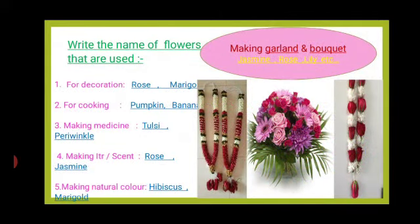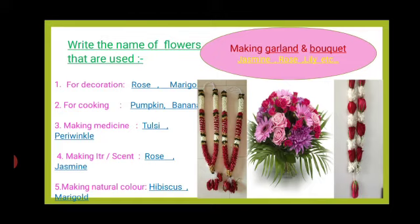Write the names of flowers used in making garlands and bouquets: jasmine, rose, lily. For decoration: rose, marigold. For cooking: pumpkin, banana, kachnar flower. For making medicine: tulsi, periwinkle, hibiscus. For making scent: rose, jasmine. For making natural color: hibiscus and marigold.